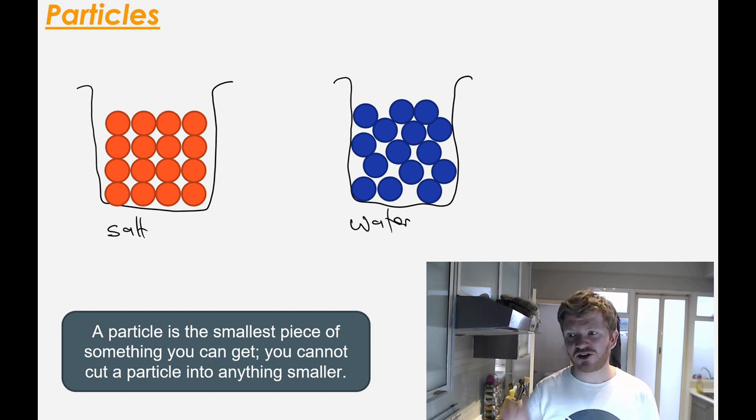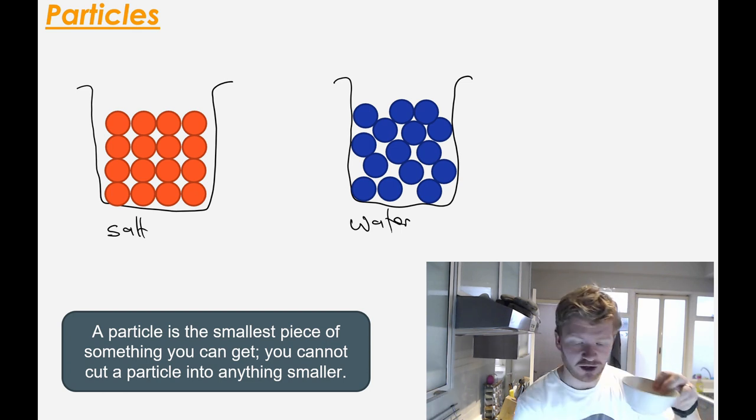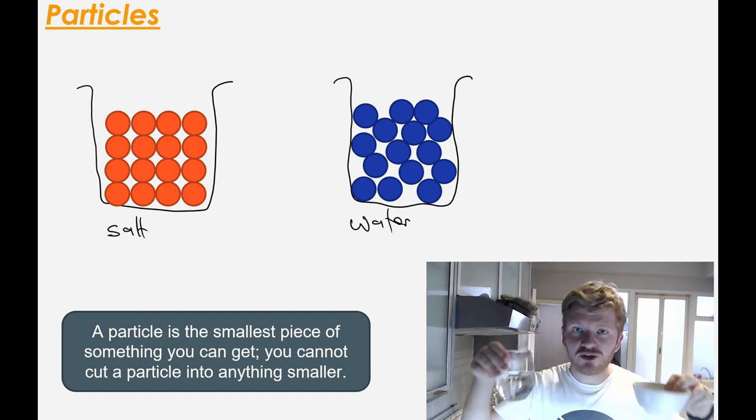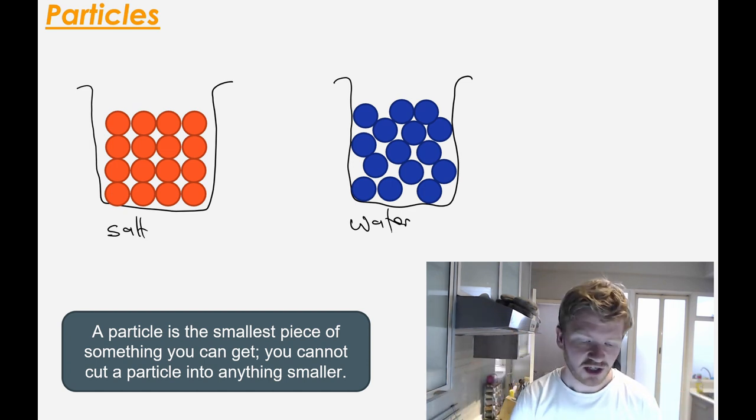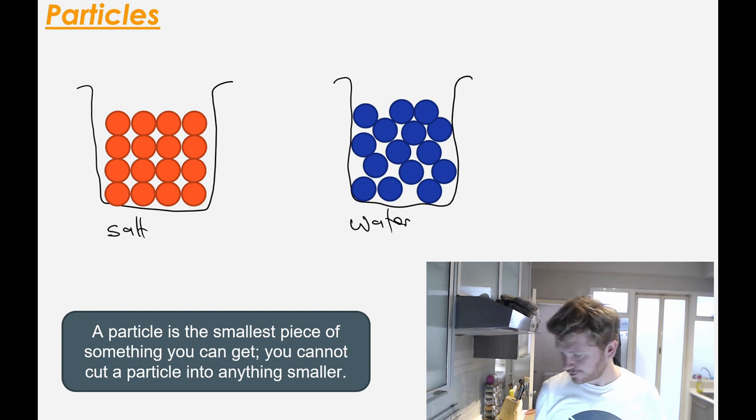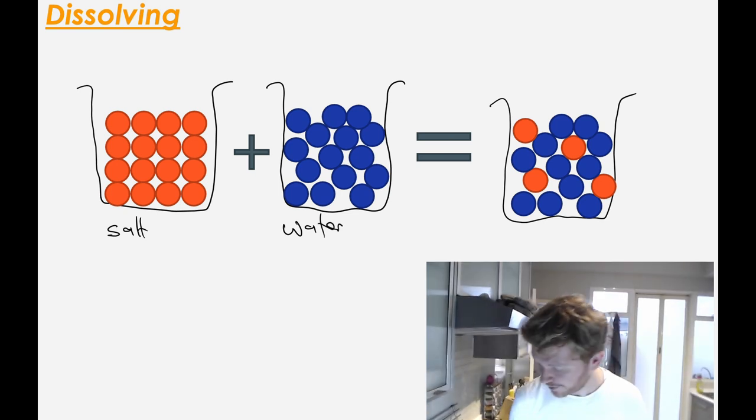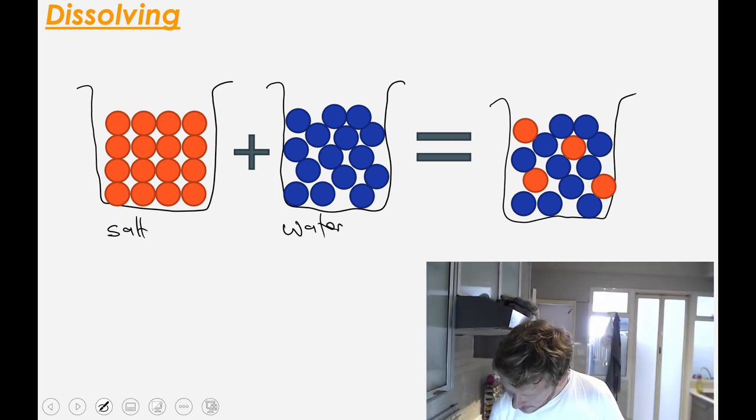So what's happening is I'm taking the salt or the sugar particles that are a solid and I'm putting them into this liquid. And when I do that, the process is called dissolving. And what it looks like is this. What happens is the liquid particles are still there and they're still liquid. But now the solid particles are broken up and spread out. And we call this a mixture.